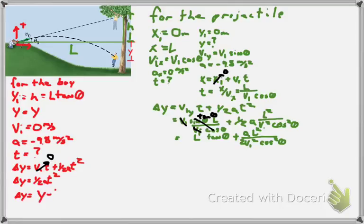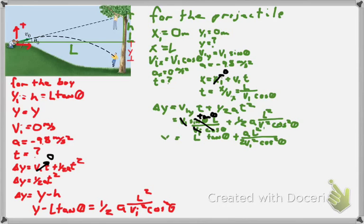Let's go back to our boy falling and plug in for the time. Delta y is y final minus y initial, which is y minus h, which is y minus L tangent theta equals 1/2 A L squared over v_i squared cosine squared theta. Once he's fallen, once the same amount of time has passed in both directions, what we find is we get the exact same equation.